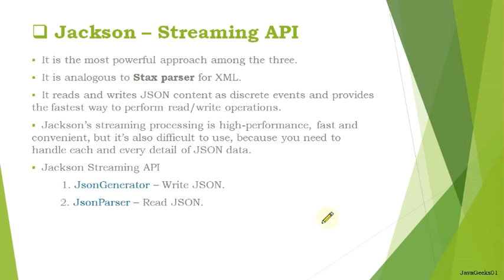For example, suppose you have a JSON data file that is large in size. If you load all the data using the Tree Model approach in memory, your memory consumption will increase. Also, if you don't want to read the whole data but only a certain set — like the first 10 lines — and apply logic on that, you can use Streaming API, and your memory consumption will go down. It gives high performance and is fast and convenient, but it requires handling each and every discrete event in the JSON data, checking what kind of data it contains and applying logic accordingly.